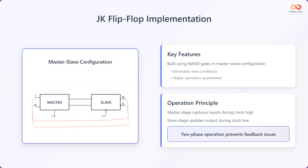Here we have a circuit implementation of the JK flip-flop using a master-slave configuration. It is built using NAND gates and eliminates race conditions, guaranteeing stable operation. During operation, the master stage captures inputs when the clock is high, and the slave stage updates the output when the clock is low. This two-phase operation prevents feedback issues.